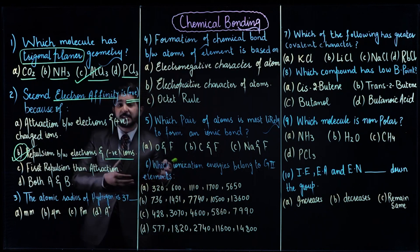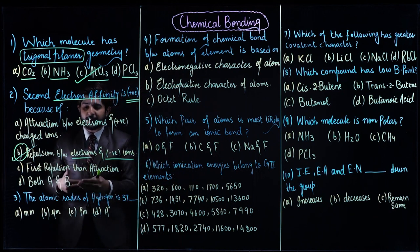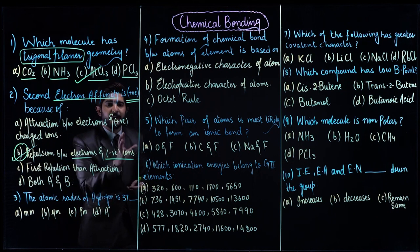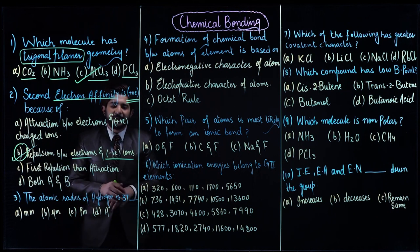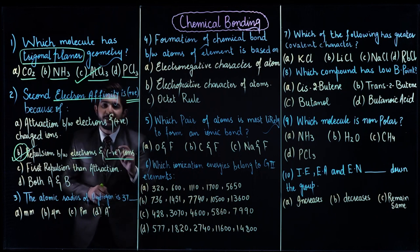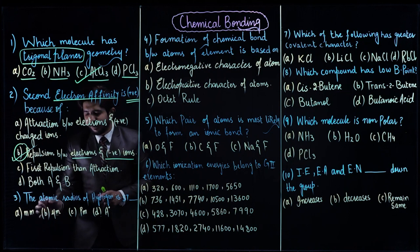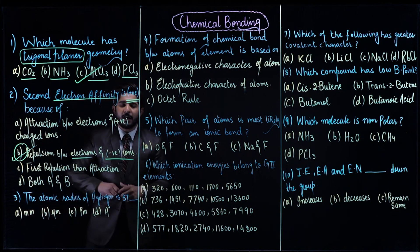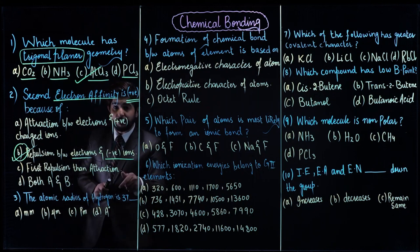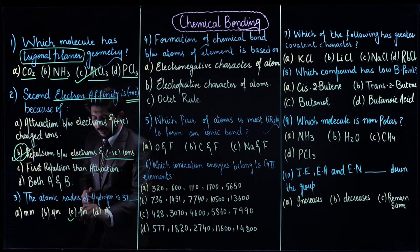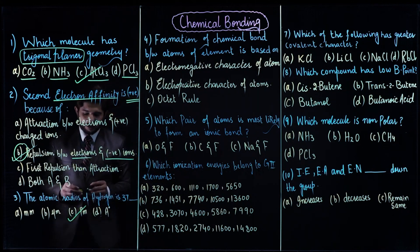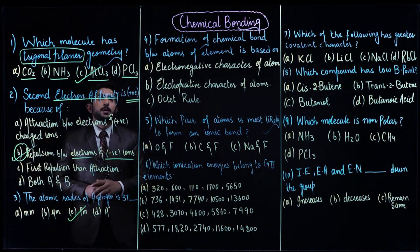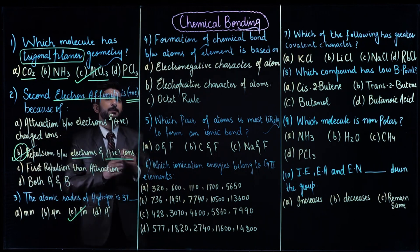So this is the atomic radius. Just relevant to this question — the atomic radius of hydrogen is 37. The unit to mention is picometer, so the value is 37 picometers. Now moving towards question number 4.